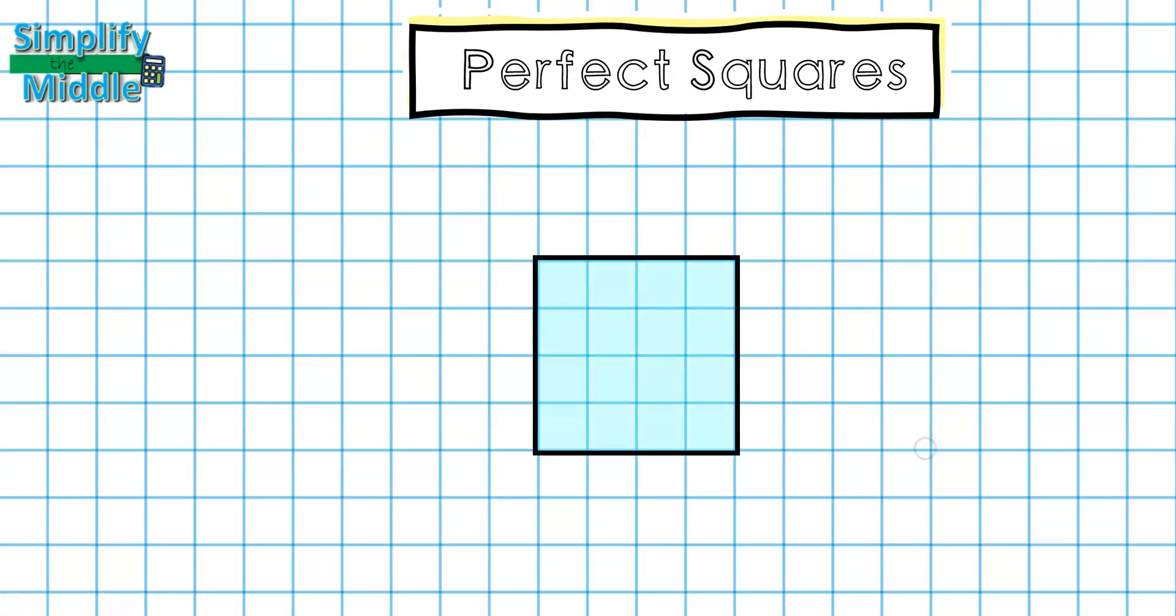Following this pattern, we can easily see that perfect squares mean the amount of boxes, also known as the area, inside a square.